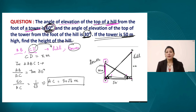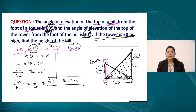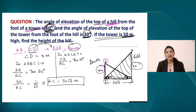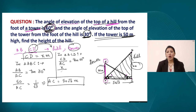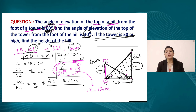Now using the value of AC in the other triangle ACD, we have the base AC, and the base angle of 60 degrees. Letting CD equal x, we write 50 root 3 equals tangent 60 degrees, which is root 3. On solving this equation, x equals 150 meters. This is the height of the hill.